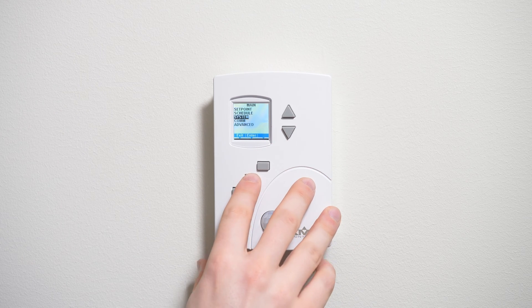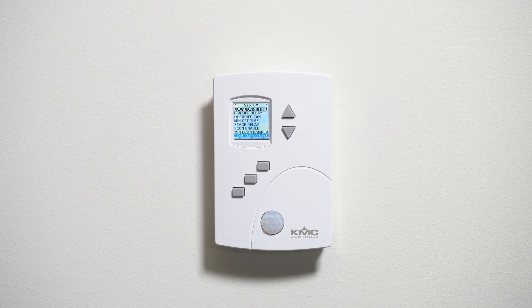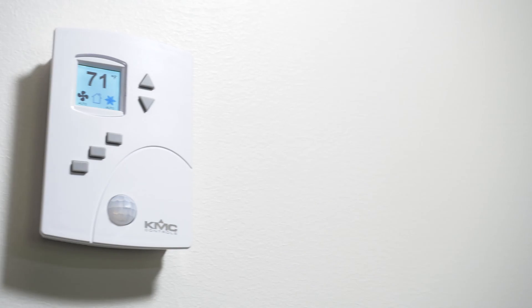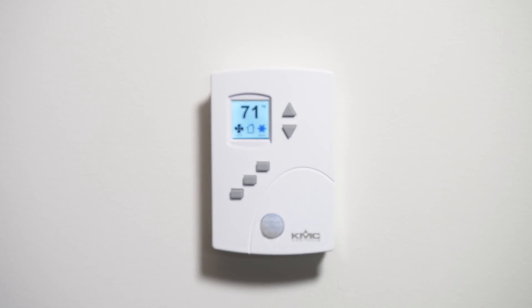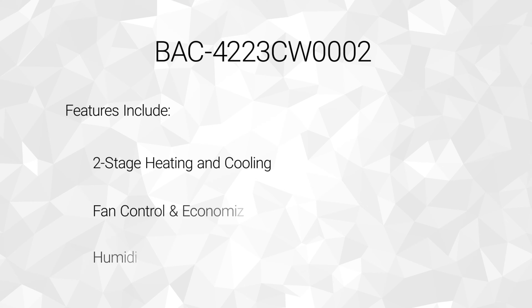The system menu is where the menu becomes specific to the integrated AppStat applications. Different AppStat models are designed with factory supplied programs for fan coil units, rooftop units, heat pump units, and packaged and split unitary systems. The menu options change depending on the designated application and on the model. In our example, we're setting up a BAK 4223C W0002 — a model for rooftop units with modulating valves, one or two-stage heating and cooling, fan control, and an economizer. It includes a humidity sensor and motion sensor.